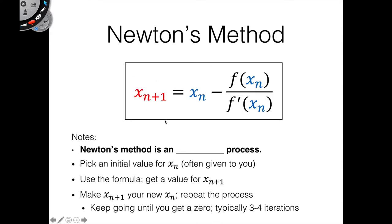So this is the formula associated with Newton's method. It might look a little convoluting, but we'll talk about it. We have x_{n+1} = x_n - f(x_n)/f'(x_n). So a few notes I would like to go over with you about this process. Newton's method is what we call an iterative process.